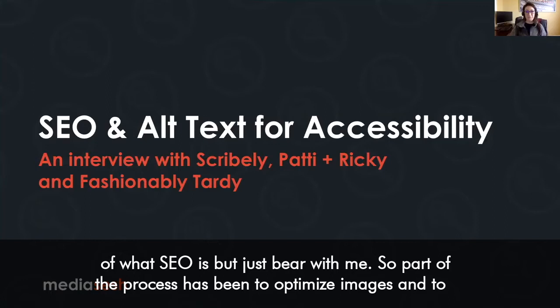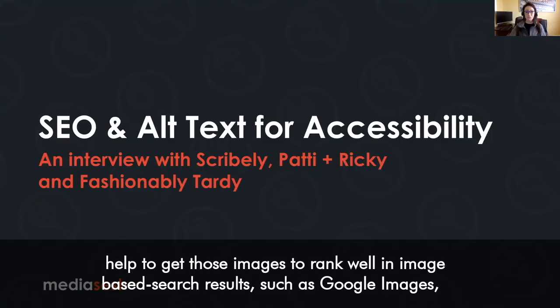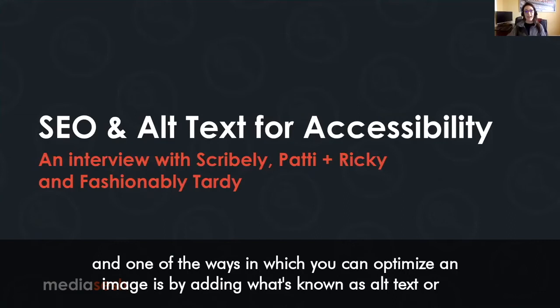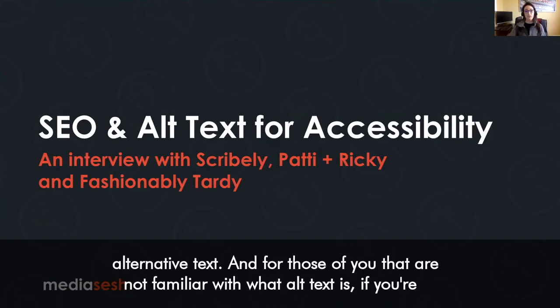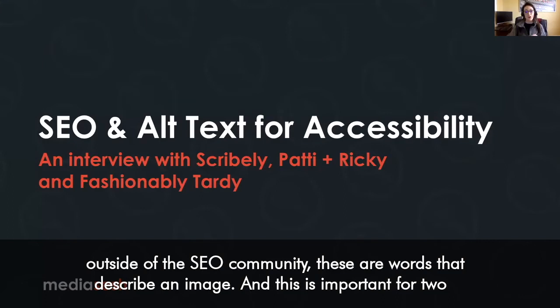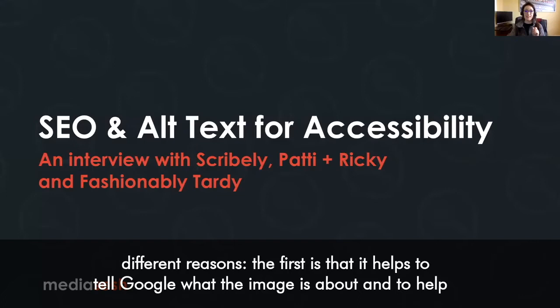Part of the process has been to optimize images and help get those images to rank well in image-based search results, such as Google Images. One of the ways you can optimize an image is by adding what is known as alt text, or alternative text. The first reason is it helps tell Google what the image is about and helps you rank in image-based search results.